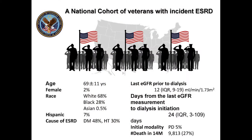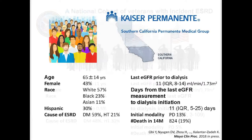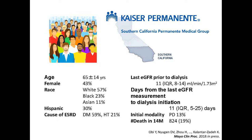In this study, we included two historical cohorts of incident ESRD patients with distinct features. One is a national cohort of the Veterans Affairs, which we call the VA cohort. It included more than 85,000 US veterans who transitioned to dialysis treatment from October 2007 through March 2014. The other cohort came from Kaiser Permanente Southern California, KPSC. The KPSC cohort included 9,700 patients who transitioned to dialysis treatment within the KPSC healthcare system from January 2007 through September 2015.